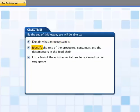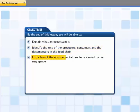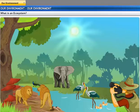You will also be able to identify the role of the producers, consumers, and the decomposers in the food chain, and list a few of the environmental problems caused by our negligence. The environment comprises the air you breathe, the water that covers the surface, the animals and the plants around you, and much more.